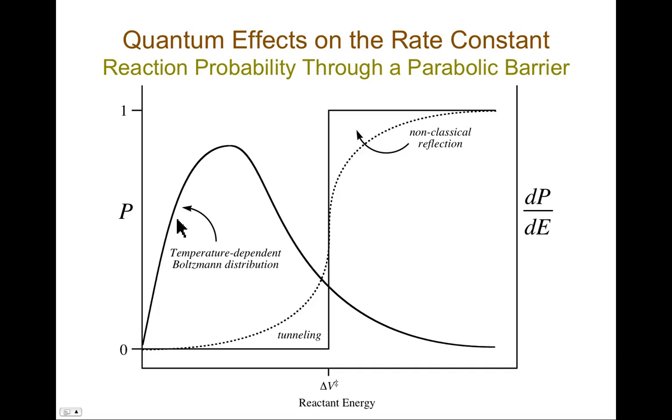The trouble is if you think about a temperature-dependent Boltzmann distribution, so here is the distribution of energies, well, there are a whole lot more systems that can take advantage of tunneling than there are systems that have enough energy to worry about non-classical reflection. And so tunneling can tremendously increase the rate of a reaction beyond what's expected.